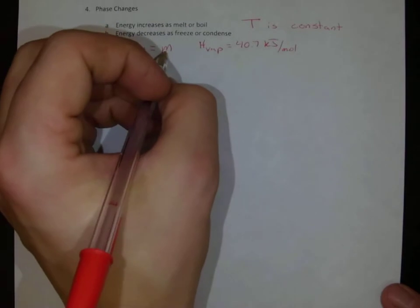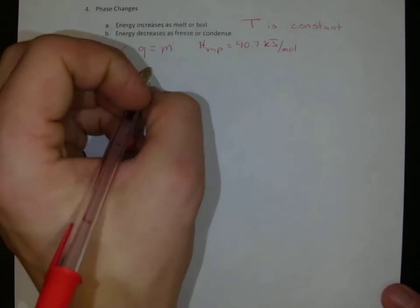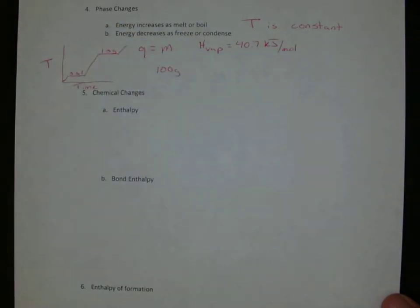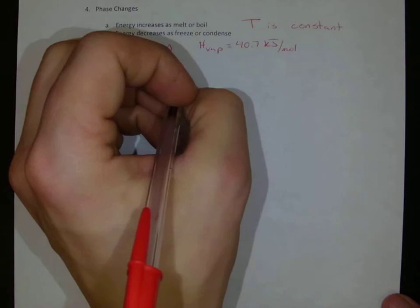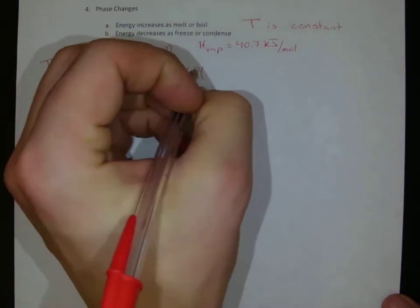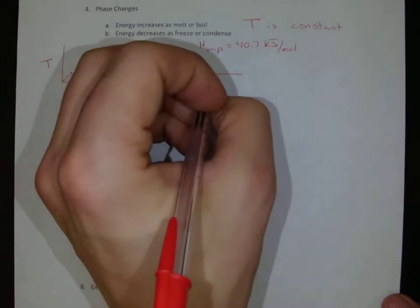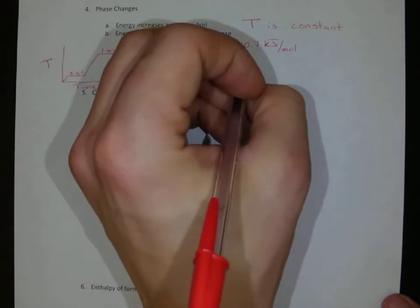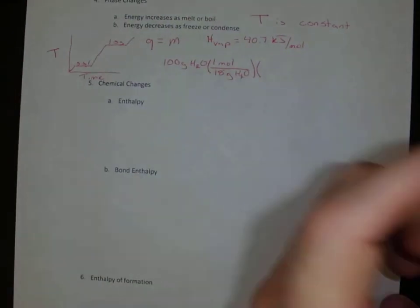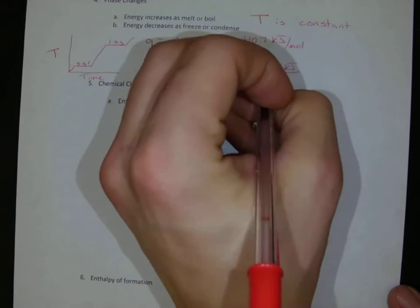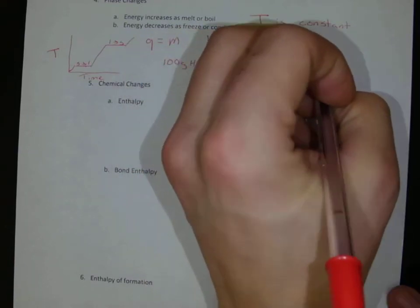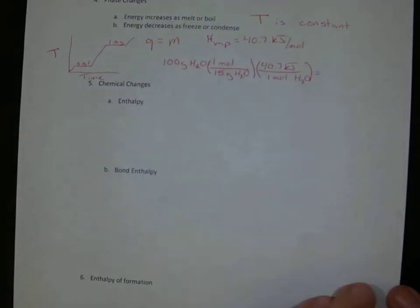So if we have, let's say we had 100 grams of water that we were going to boil, well, that 100 grams, we of course would need to change to number of moles, so 18 grams of H2O to one mole, and then we can use our heat of vaporization there, and say 40.7 kilojoules per one mole of H2O, and that's going to give us our energy that it takes to do this.